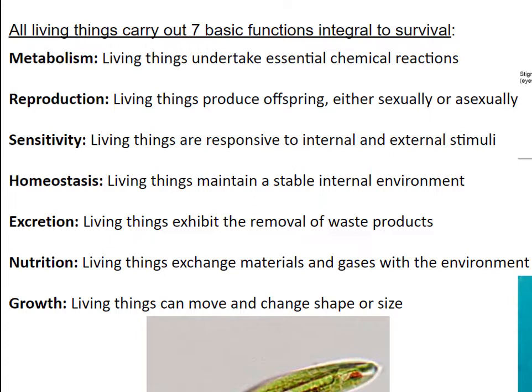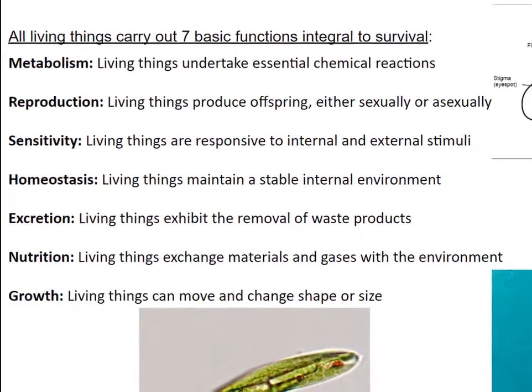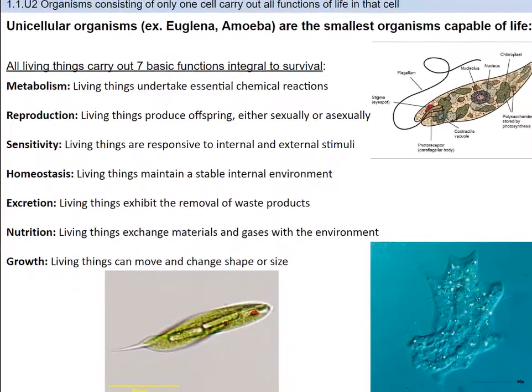Another characteristic is reproduction — an organism can produce offspring either sexually or asexually. Another component is sensitivity: being responsive to stimulus around you. If someone dumped a bucket of ice water on you, you probably would have a reaction. Another characteristic is homeostasis — living things maintain a stable internal environment, which we covered in Topic 6 during Human Physiology. Another one is excretion: living things exhibit the removal of waste products — everybody poops. Sixth is nutrition: living things exchange materials and gases with the environment. Last but not least is growth — living things can move and change size or shape.